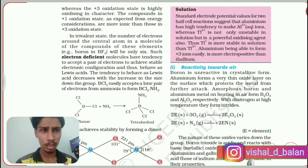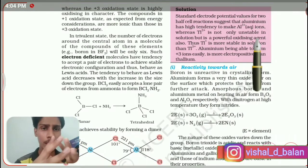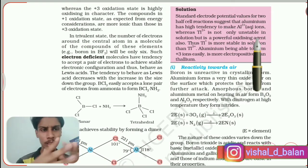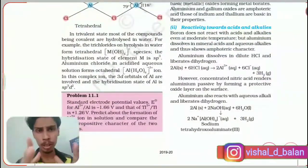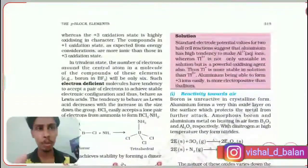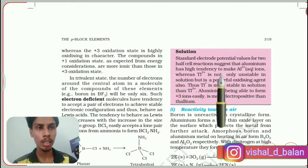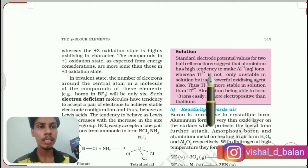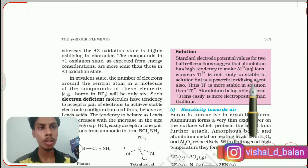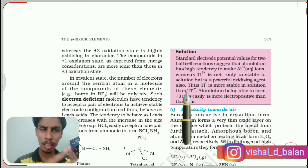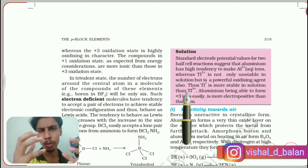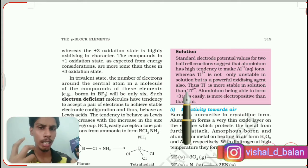You can see a pink color box here. I am going to explain that box first — there is a question here itself, but I am not going to read it; I am just going to explain the definition. Standard electrode potential values for two half-cell reactions suggest that aluminum has a high tendency to make Al³⁺ ions, whereas thallium³⁺ is not only unstable in solution but is also a powerful oxidizing agent. I am taking two substances: one is aluminum³⁺ and another is thallium³⁺.